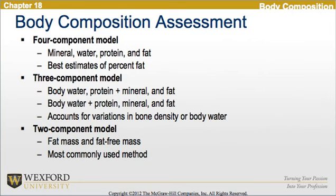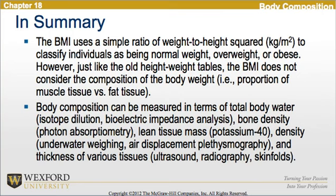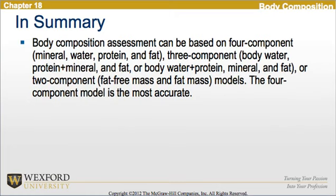In summary, BMI uses the simple ratio of weight to height squared to classify individuals as normal weight, overweight, or obese. However, like the old height-weight tables, BMI does not consider the composition of body weight, i.e., the proportion of muscle to fat tissue. Body composition can be measured through total body water via isotope dilution or bioelectric impedance analysis, or through bone density, lean tissue mass, density, and thickness of various tissues. Assessments can be based on four-component, three-component, or two-component models, with the four-component model being the most accurate.